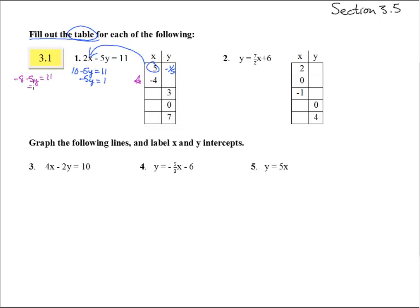Add 8, we get negative 5y equals 19. Divide both by 5 and we get negative 19/5.